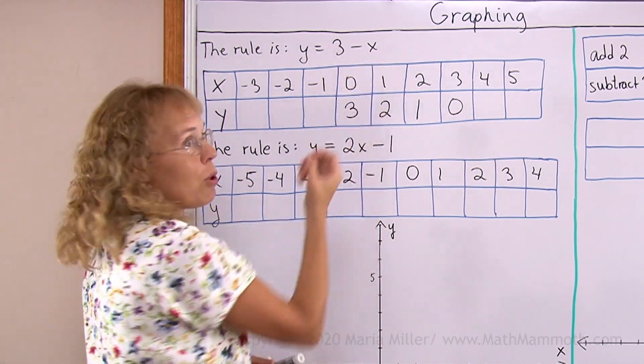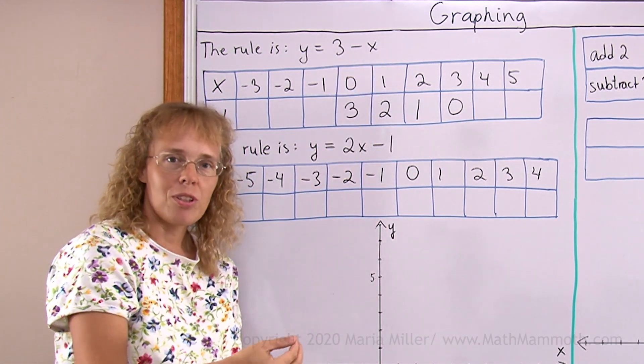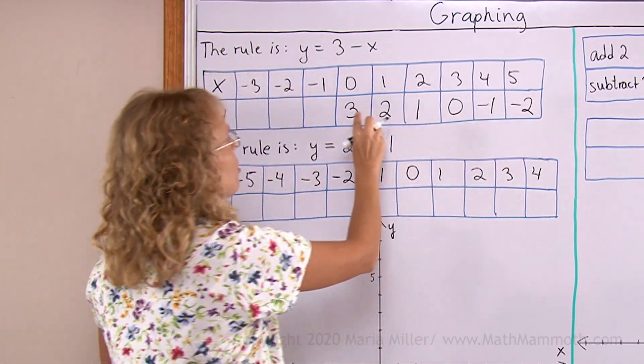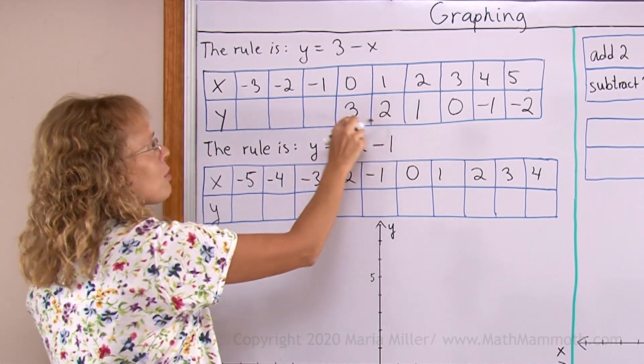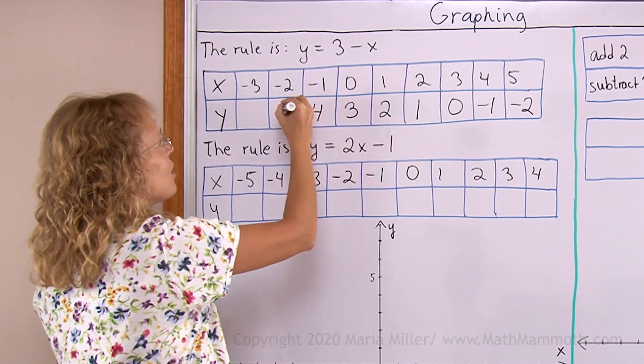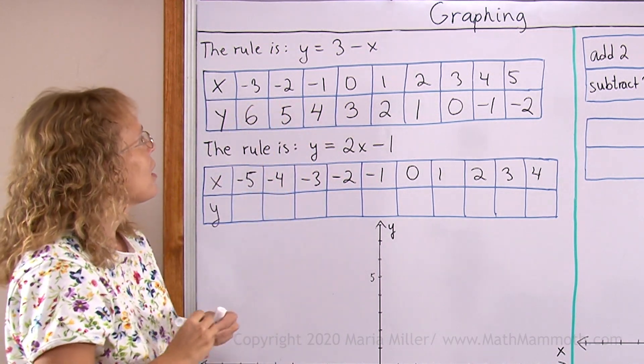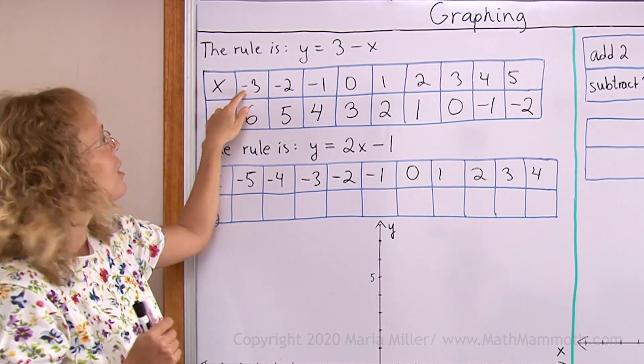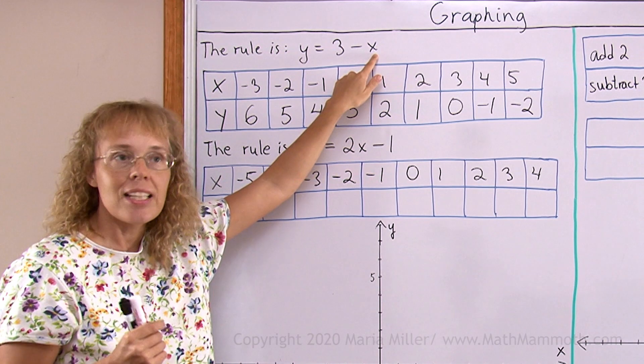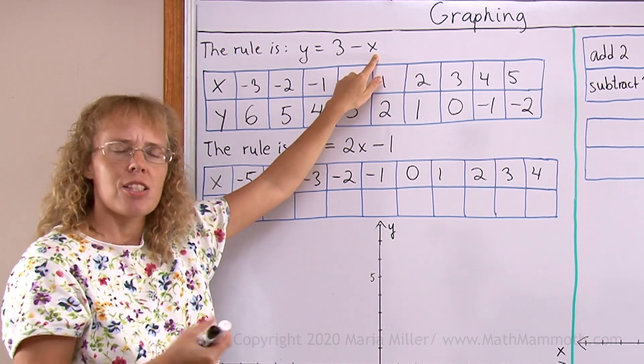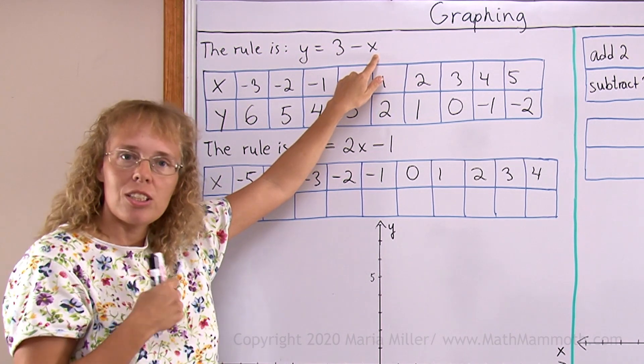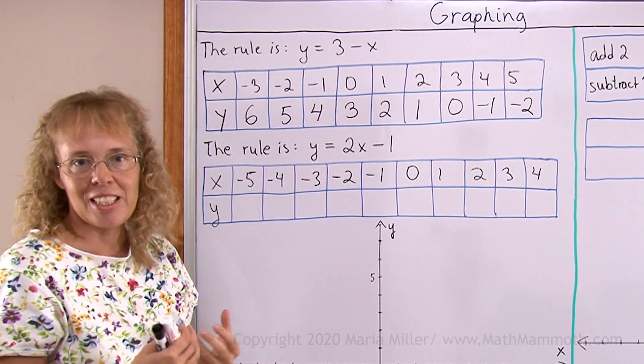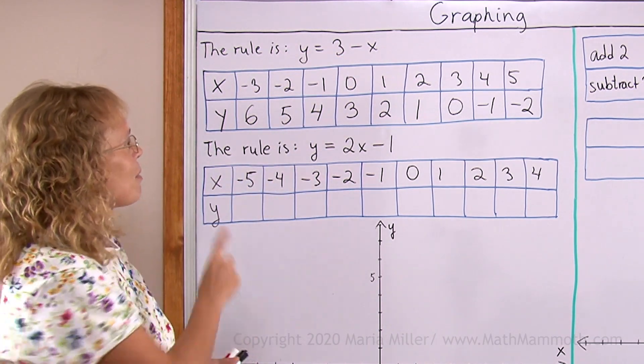How about 4? 3 minus 4. Now 3 minus 4 is negative 1, right? And here's negative 2. The pattern continues. The pattern will continue this way too: 1, 2, 3, 4, 5 and 6. Let me just try it with the rule too. If x equals negative 3, if I put negative 3 here in place of x, I get 3 minus negative 3. That's the double minus then, double negative. That turns into a plus sign. There's a shortcut about that, right? You remember that? So it becomes 3 plus 3 equals 6.